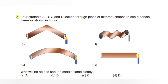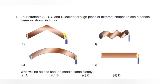Question number 1: Four students A, B, C and D look through the pipes of different shapes to see a candle flame as shown in the figure. There are 4 different pipes — options A, B, C and D — 4 different types of pipes, and a candle. The question is: who will be able to see the candle flame clearly?